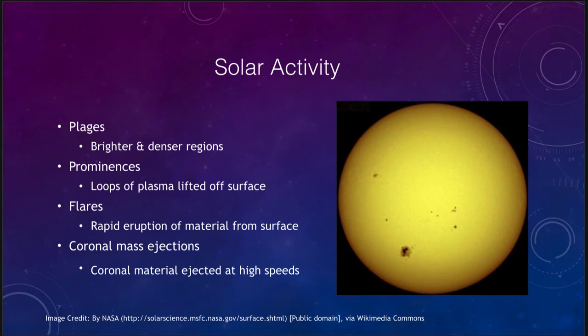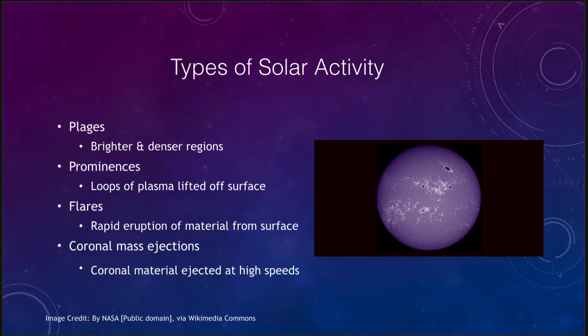First, we see sunspots — the darker areas on the surface of the Sun. That is perhaps the most visible sign of solar activity. But we see lots of other signs, such as the plages which are visible here — the brighter and denser regions around sunspots are also part of the signs of solar activity, and we can see how they are associated with those very dark sunspot areas.